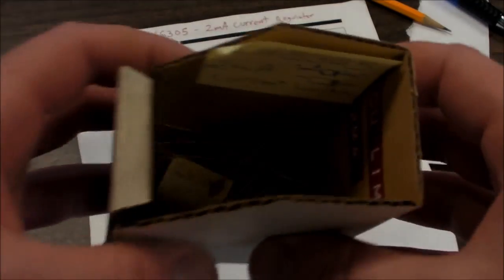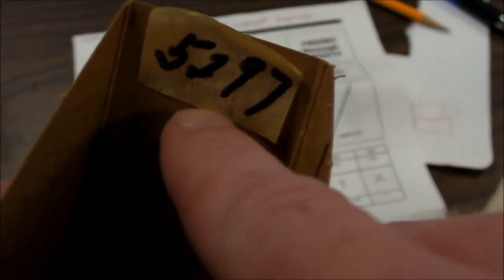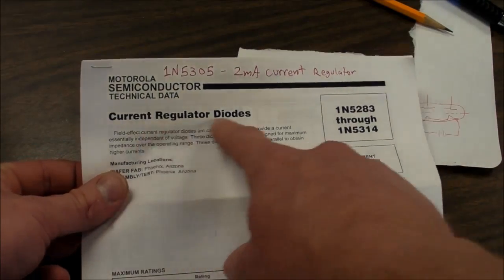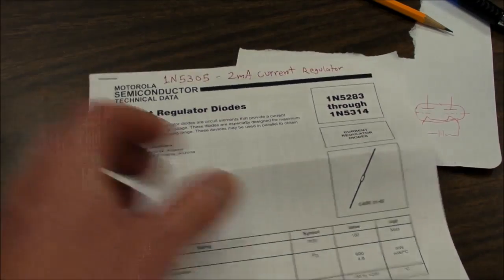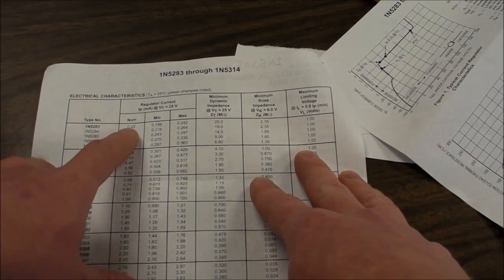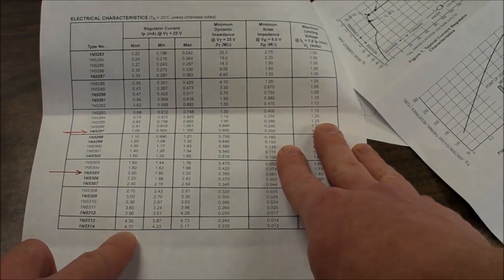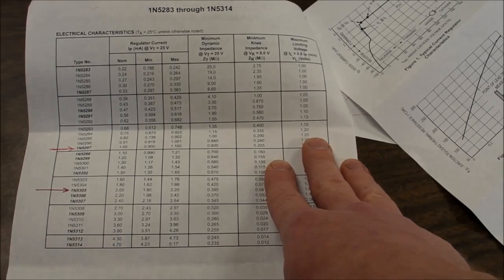So here is what those devices actually are. Here's the 2 milliamp ones. Those are part number 1N5305, and the 1 milliamp is the 1N5297. Got a whole bunch of them in these little cardboard boxes. Here's the data sheet if the camera will focus. Current regulator diodes. Got a whole series of them. There's the 2 that I got, but they vary anywhere from 0.22 milliamp regulation all the way up to 4.7.